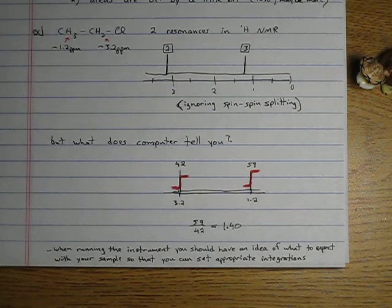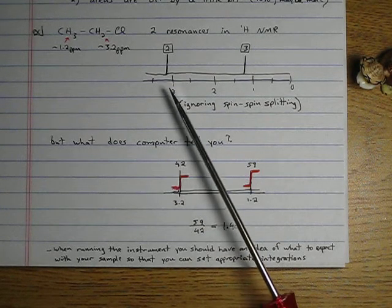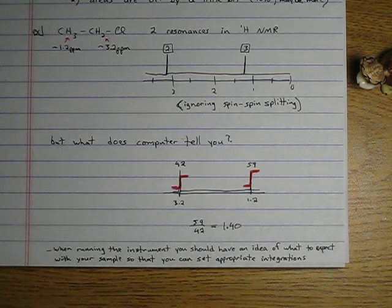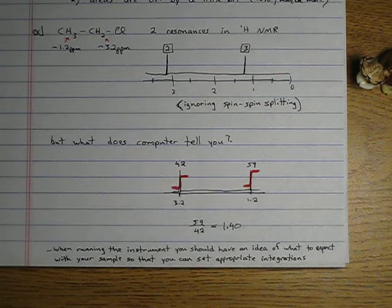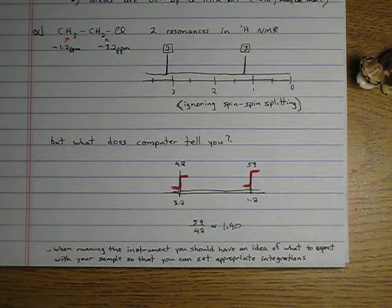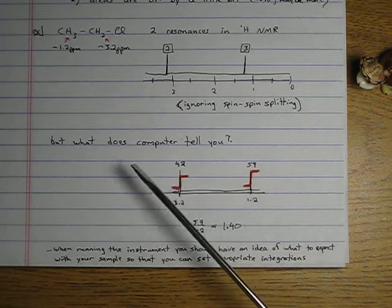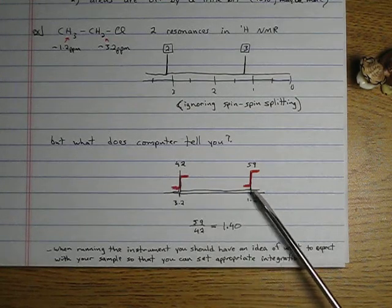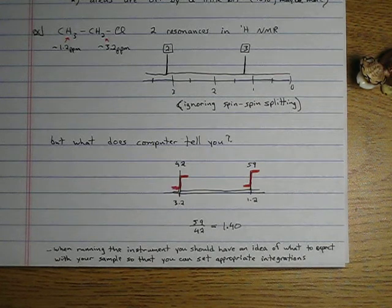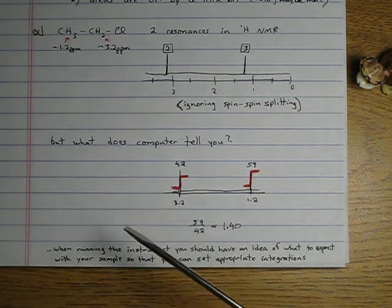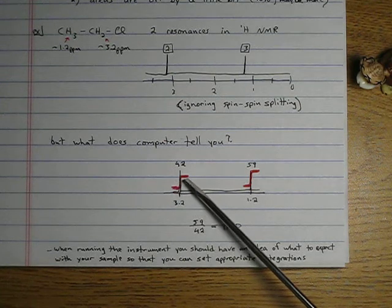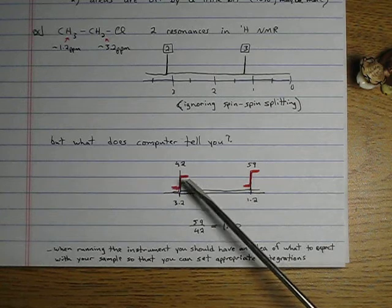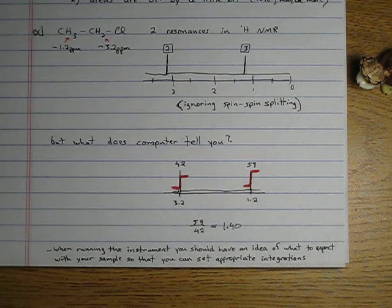So this is what we would expect. A nice thing the computer says, two protons here, three protons here. But that's not what you're going to get. That's not what the computer is going to print out for you. What is a computer going to print out for you? It will give you this. At 3.2, it'll give you a number like 42. And at 1.2, it'll give you a number like 59. It also, although probably not in red, gives you these little s shapes, these little swooshes here. These swooshes also correspond to the integration.